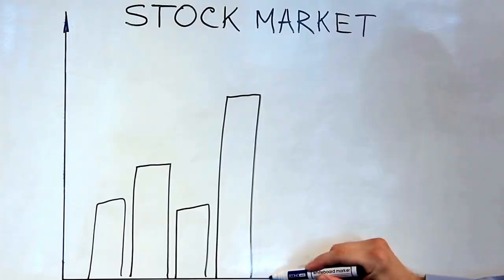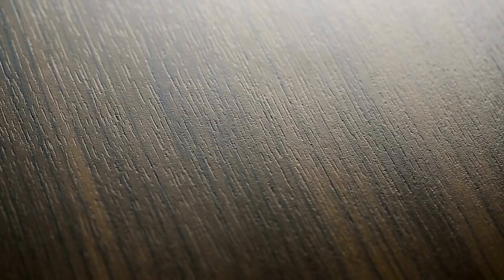who died at the age of 101. She had then accumulated a fortune worth $37 million in today's money. It's pretty wild if we consider she started with only $5,000.